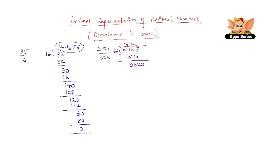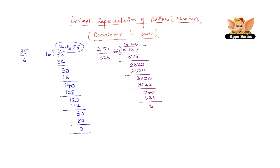625 four times gives 2500, the remainder is 320, which is not divisible by 625, so add another 0. 625 five times gives 3125, remainder is 75. Add a 0 because 75 is not divisible by 625. 625 one time is 625, remainder is 125. 125 is not divisible by 625, so add another 0. 625 two times gives 1250, and we have a remainder of 0.